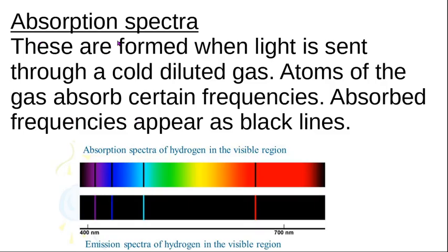The first cousin to this is an absorption spectrum. If you have a cold bundle of gas and you put the whole rainbow of light through it, the gas is going to suck some of the energy out of the light. The energy that it absorbs corresponds to the different energy levels in the Bohr theory of the atom. If you put cold hydrogen gas and shine the whole rainbow of light through it, it will absorb these specific colors — the same colors that excited hydrogen would emit. The light will come out the other side missing these specific lines.